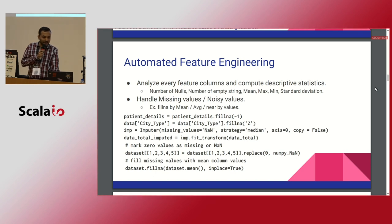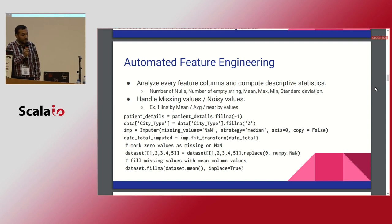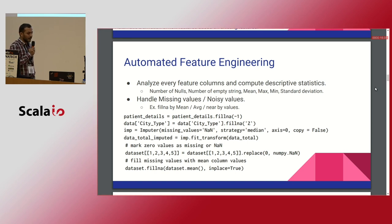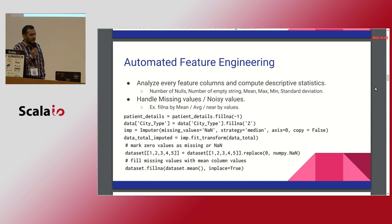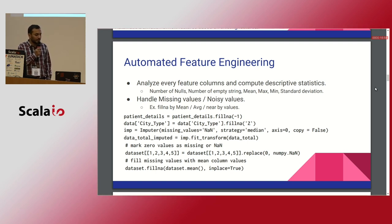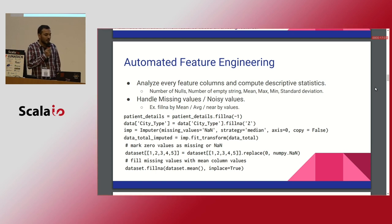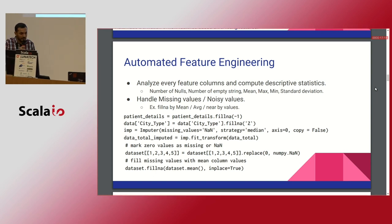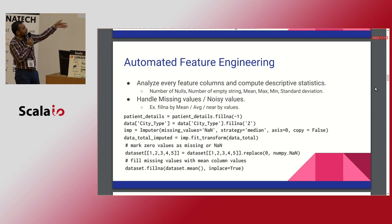When you talk about feature engineering, you remove null values and not-applicable values — you have to handle noisy data. Data scientists analyze every feature column and compute descriptive statistics; that is built into TransmogrifAI by default. To handle NA and noisy data, people typically fill NA with mean averages or some closer value. Without automation, you need to manually get those cells, replace them with a mean value, and then fit the model on top of that.